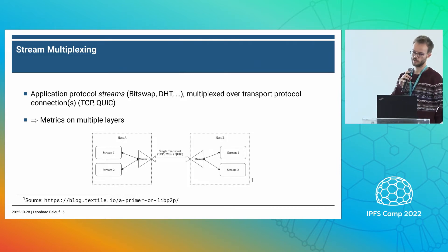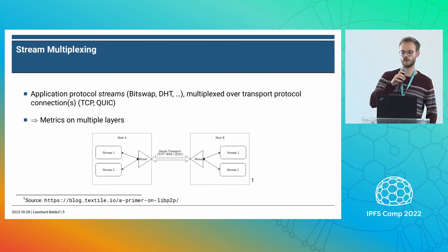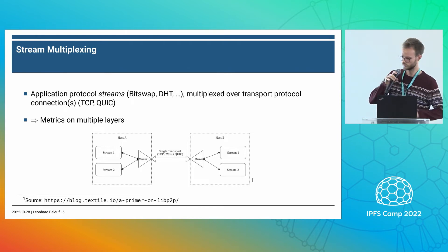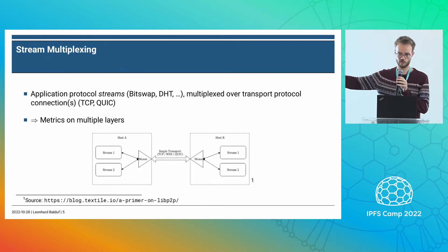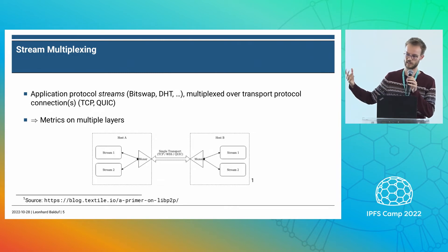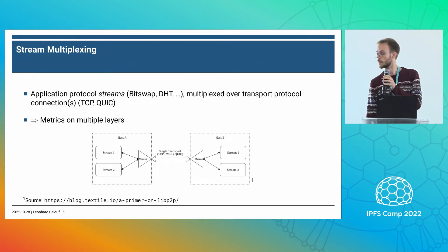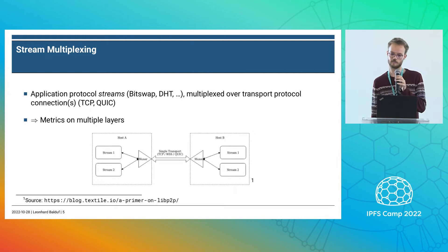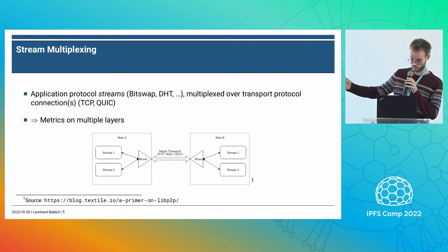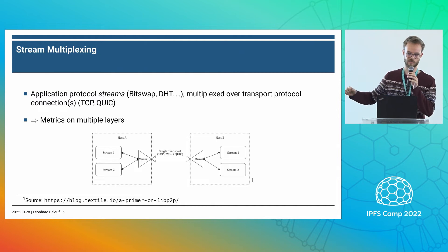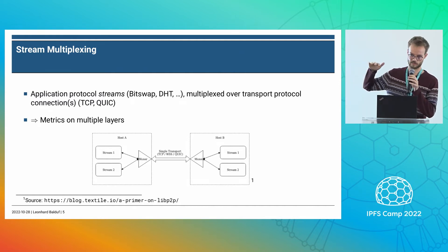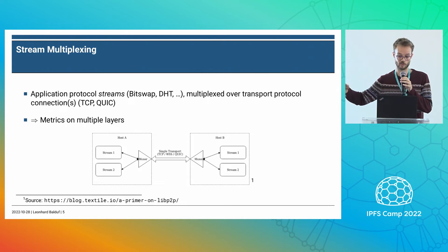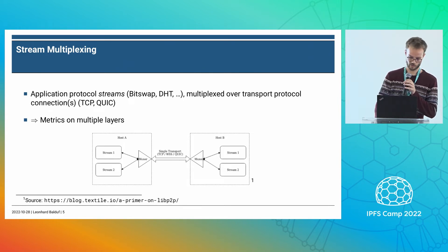IPFS is built on top of libp2p, and libp2p does so-called stream multiplexing. Two nodes — two hosts — talk to each other over a single transport connection, which is usually TCP or QUIC, and they run multiple application protocols on top of that. These are called streams in libp2p. This gives us metrics on multiple layers: we can look at the transport layer, but also at the stream layer and the application protocols on top.